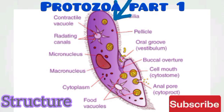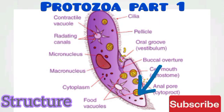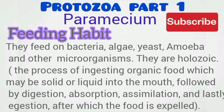Paramecium also has a contractile vacuole used for osmoregulation — balancing salt and water in the body. There is also a food vacuole and other structures visible in the diagram.